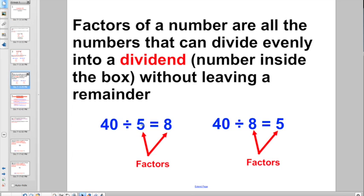We've got to start thinking that factors of a number are all the numbers that can divide evenly into a dividend, the number inside the division box, without leaving a remainder. 40 divided by 5, well 5's dividing into 40 8 whole times. Or 40 divided by 8 goes in there 5 whole times with no remainder. 8 and 5 are factors because they both divide evenly without a remainder.